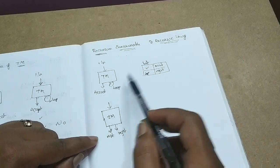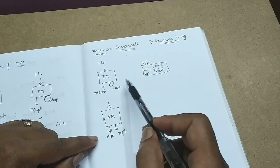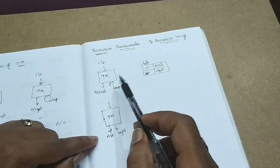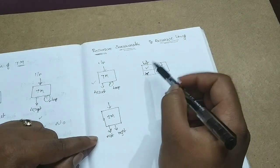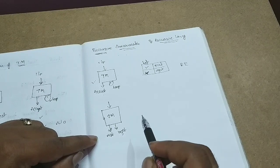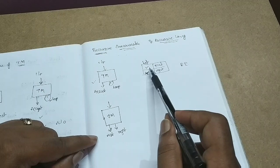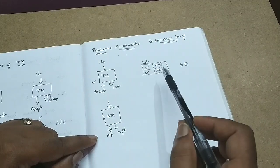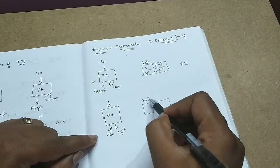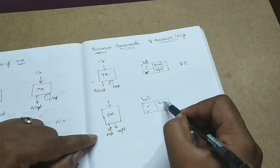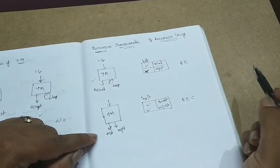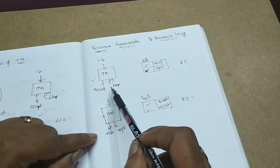A Turing machine that accepts by halting but rejects by going into an infinite loop — if you give a language to this kind of Turing machine, that language will be a recursive enumerable language.